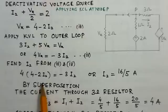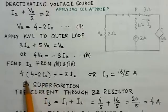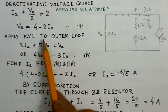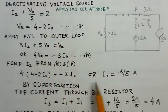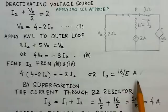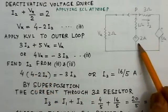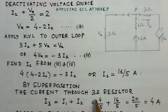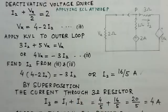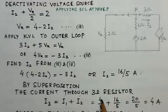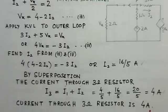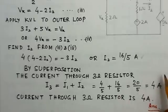Substituting the value here, because Vx is 4 times 4 minus 2I2, substituting the value of Vx here you get the value for I2 is 16/5 amperes. This value of I2 is because of the current source. If you apply superposition, the current through 3 ohm resistor would be a combination of I1 and I2 because of both independent sources. So this is 4/5 plus 16/5, 20/5, which is 4 amperes. The current through the 3 ohm resistor is 4 amperes.